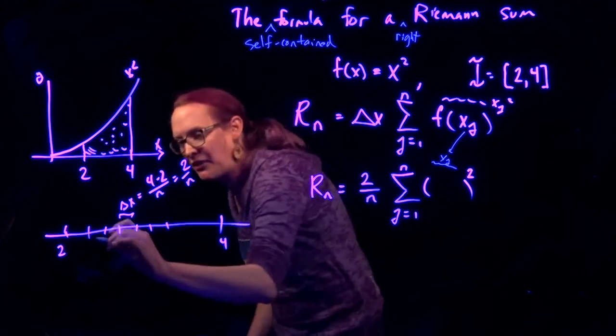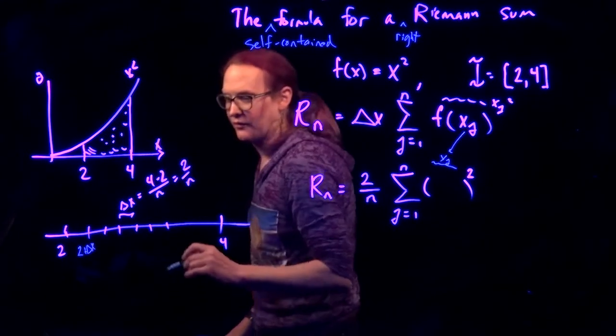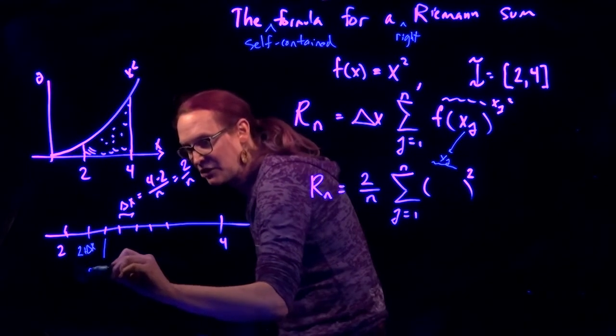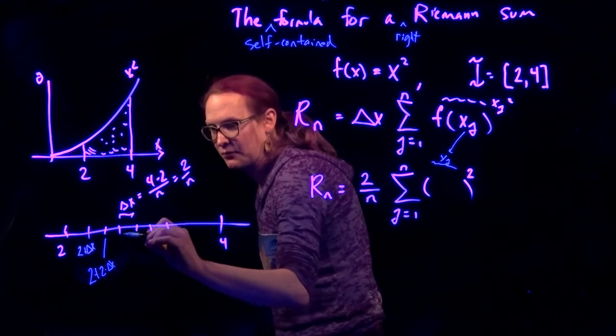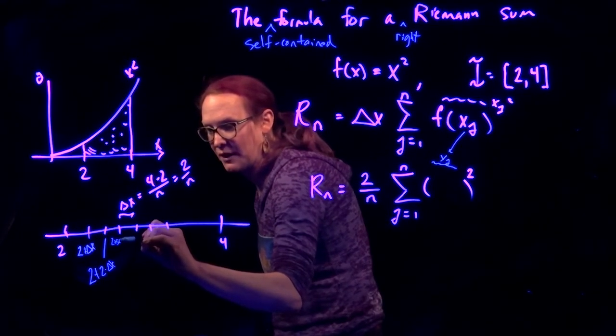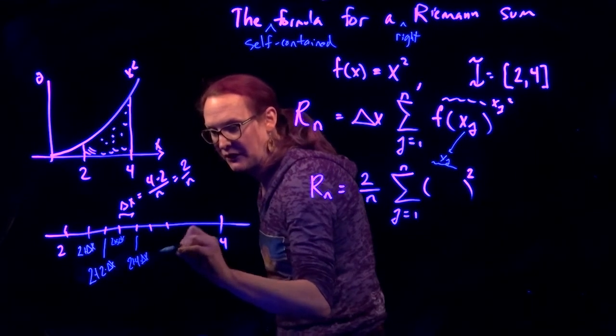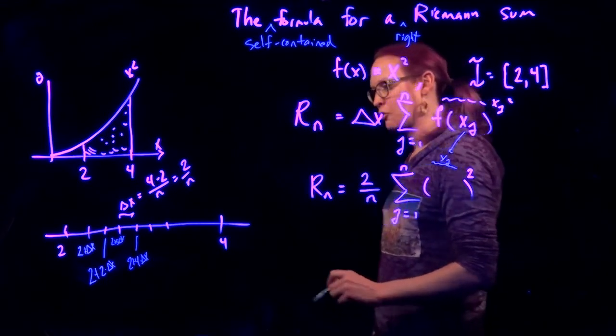Which means that this one right here is 2 plus delta x. And then this one here, I'm going to step over by delta x again. That's going to be 2 plus 2 times delta x. This is 2 plus 3 times delta x, 2 plus 4 times delta x, and so on.